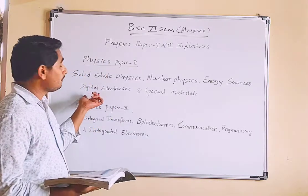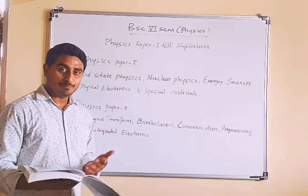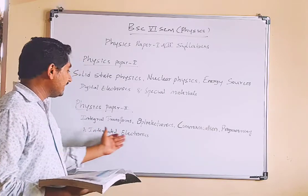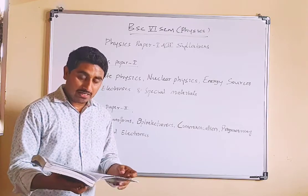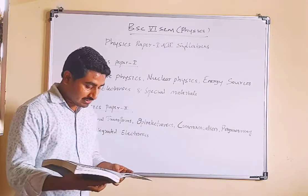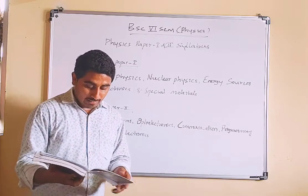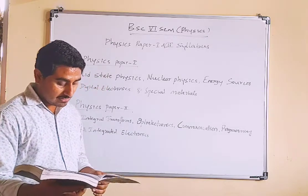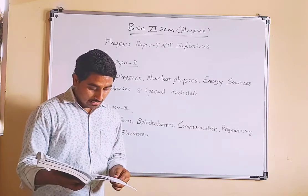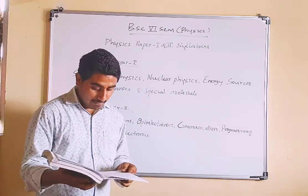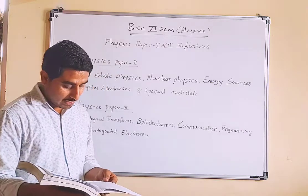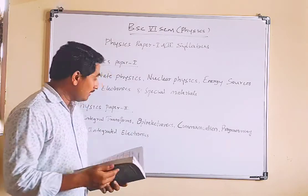Unit 5 covers integrated electronics, which spans both analog and digital electronics. Topics include non-sinusoidal oscillators, multivibrators and their types and uses, integrated circuits such as IC 555 and IC 7474 with block diagrams, operational amplifiers (op-amps) and their applications, and phase shift and Wien bridge oscillators.